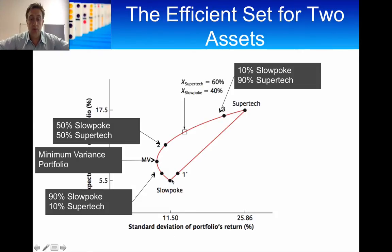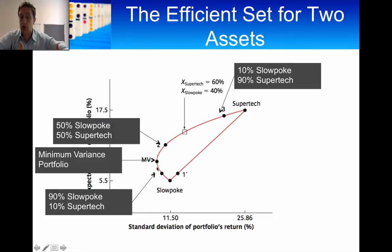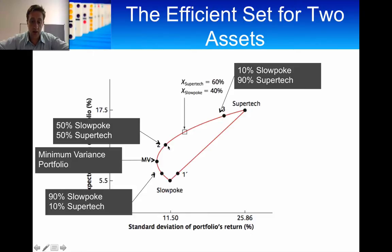All we can say is that anything below the minimum variance portfolio tends to be a bad investment. Consider a portfolio with a certain level of return and standard deviation — you can get an exact same level of risk but with a higher expected return by moving to the efficient frontier above it. Anything underneath the minimum variance portfolio on this graph is suboptimal, and you should never invest in it. So with Supertech and Slowpoke, there's no point investing only in Slowpoke, because for that level of risk, a combined portfolio gives you a much higher return.